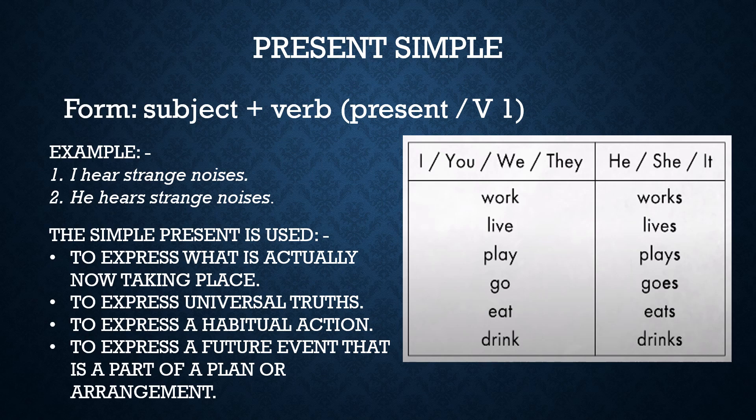We make the present simple tense with the subject — I, you, we, they, he, she, or it — plus the verb in its present form. For example: 'I hear strange noises' and 'He hears strange noises.' In present tense, if the subject is I, you, we, or they, we use the verb without S. If the subject is he, she, or it, we add S to the verb.